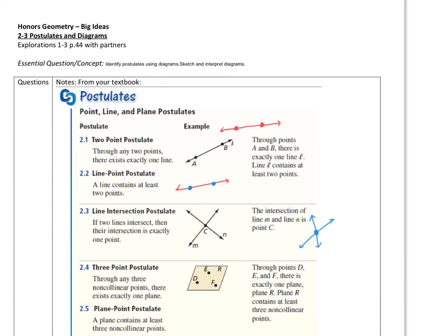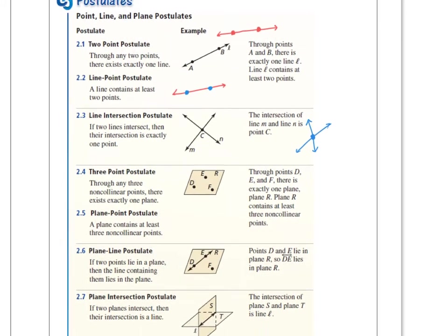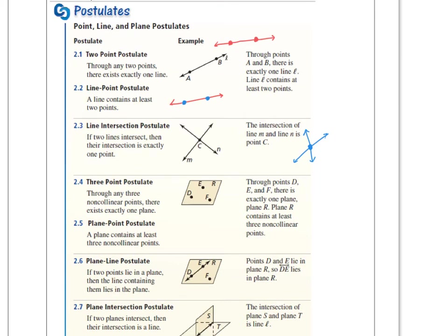Next, we have the three-point postulate. Just like through any two points, there can only be one line, there exists exactly one line. If you have three points, through any three non-collinear points, so you don't want this point right there to be on the same line as the other one, then you can make one plane. You need three points to make a plane.